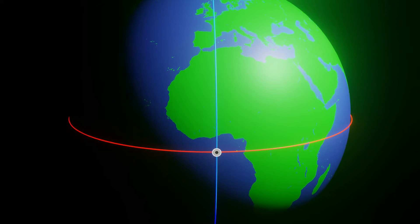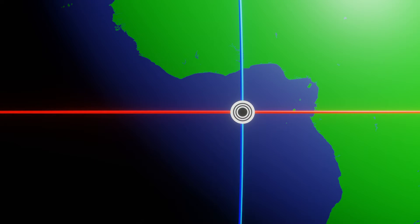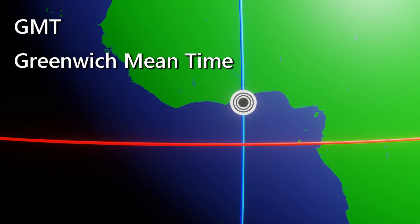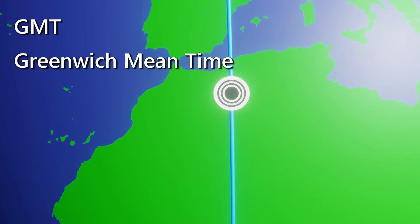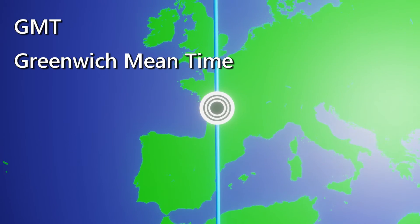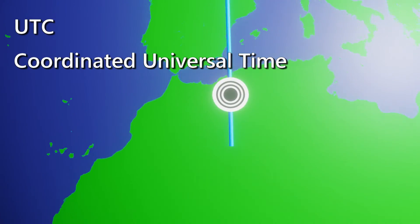The equator is our zero line of latitude and splits the Earth into the northern hemisphere and the southern hemisphere. Our zero line of longitude is called Greenwich Mean Time, or GMT, as it passes through Greenwich, London, in the UK. This line is also known as the UTC, or Coordinated Universal Time.